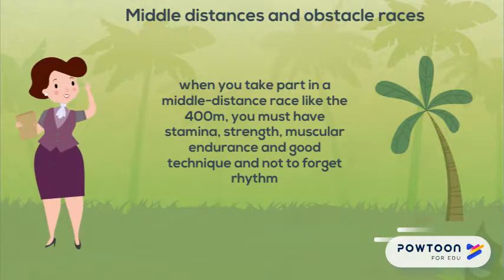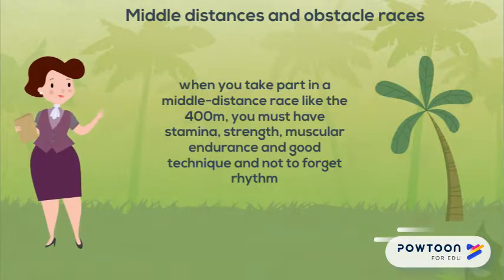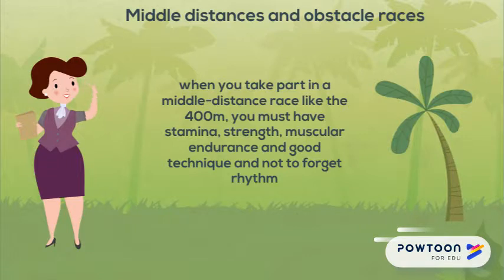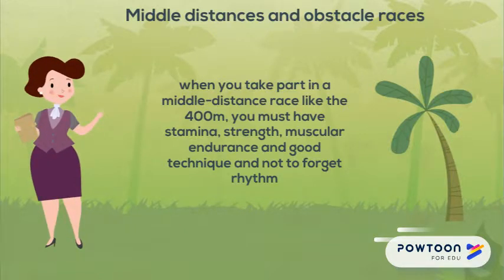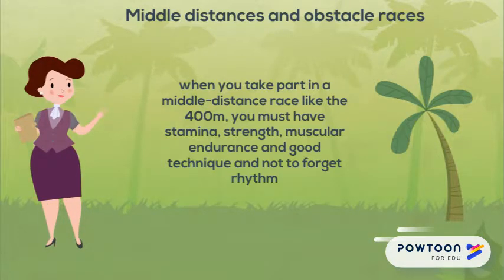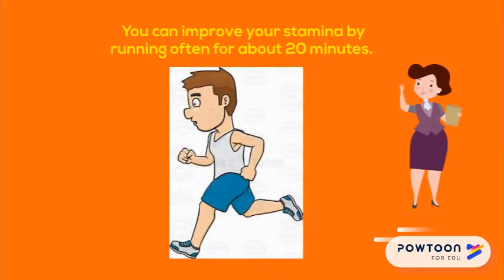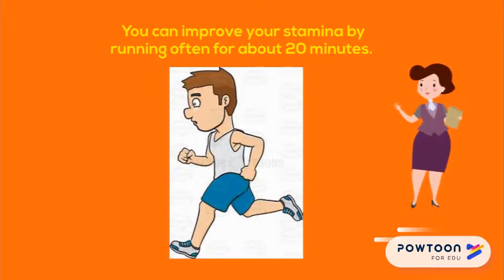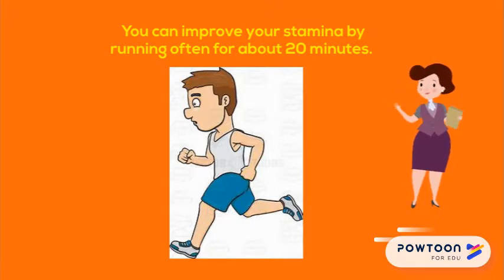When you take part in a middle distance race like the 400 meters, you must have stamina, strength, muscular endurance, and good technique — and not to forget rhythm. You can improve your stamina by running often for about 20 minutes. You can improve your strength by running uphill and in sand.